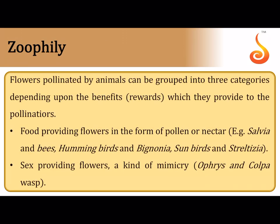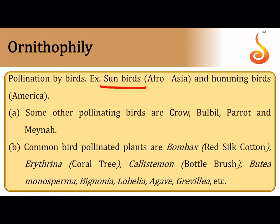Animals including birds and larger primates like lemurs also help in pollination. Some flowers mimic the opposite sex of certain wasps — like Ophrys and Colpa — attracting them through pseudo-copulation. The insect tries to mate with the flower, and pollen gets dusted onto its body or onto the stigma of the flower.